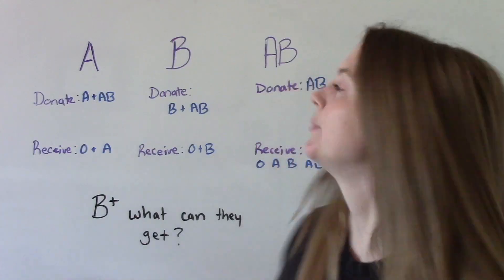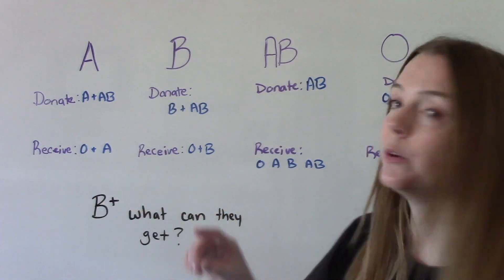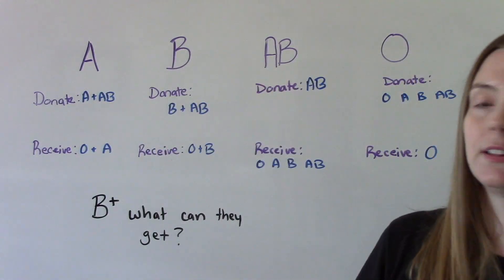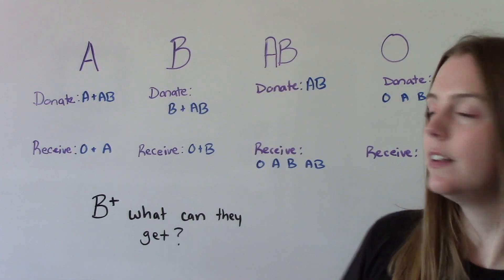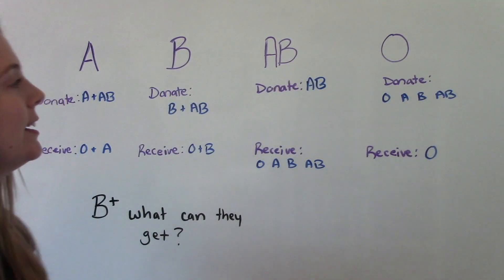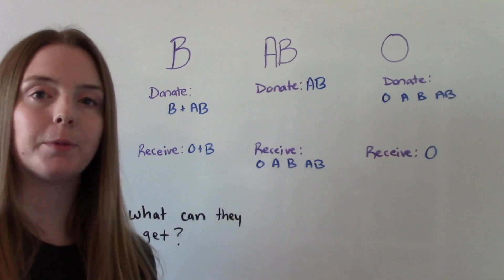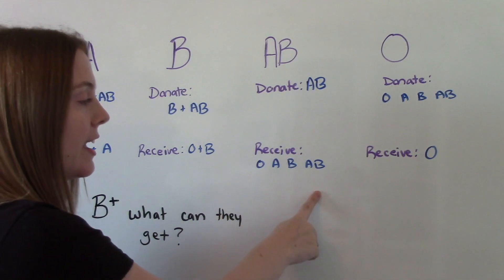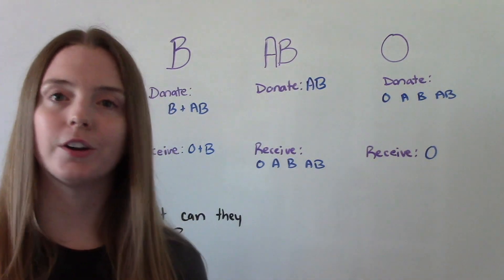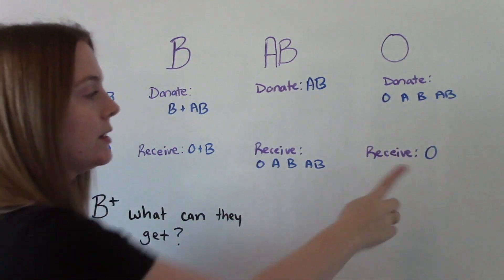To review: type A can donate to A and AB, and can receive from O and A. Remember, O is the universal donor, so everybody can get O. Type B, similarly, can donate to B and AB, and receive from O and B. AB can only donate to AB, but can receive from everybody — O, A, B, and AB — this is our universal recipient. And then O, our universal donor, can donate to everybody — O, A, B, and AB — but can only receive O.